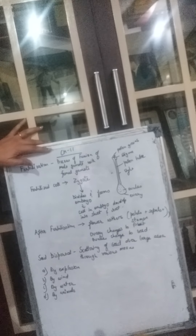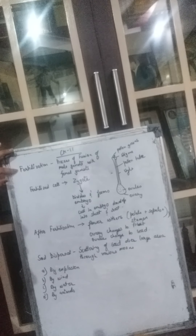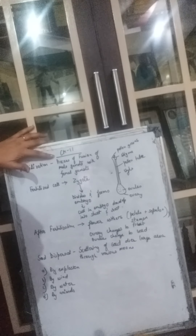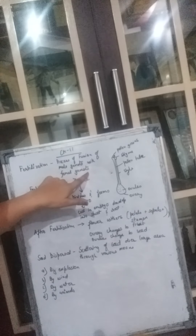Good morning, girls. We are in continuation of Chapter Number 11: Reproduction in Plants, and today we will study about fertilization. Fertilization is a process of fusion of the male gamete with the female gamete.